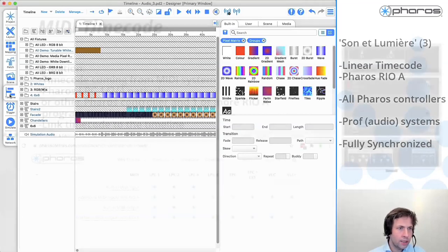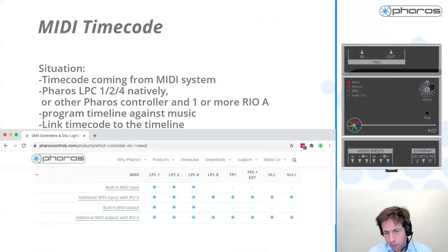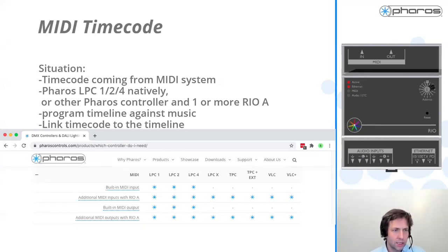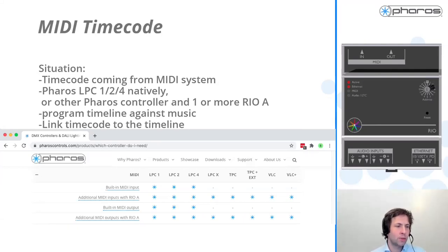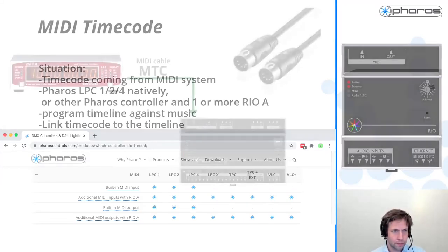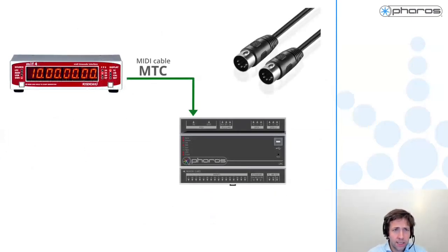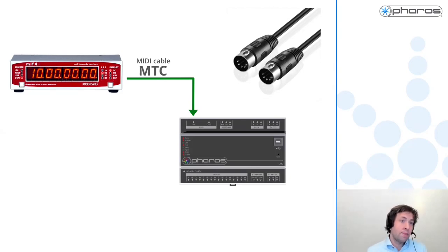Let me now go to MIDI. There's also this concept of MIDI timecode. The benefit is that our LPC controllers - the DIN rail controllers - also have a MIDI input, so they can support MIDI timecode natively. Rather than going via an audio cable, there are MIDI plugs that you can put directly into your Pharos controller. And now it can understand MIDI signals, which means it can also understand MIDI timecode.